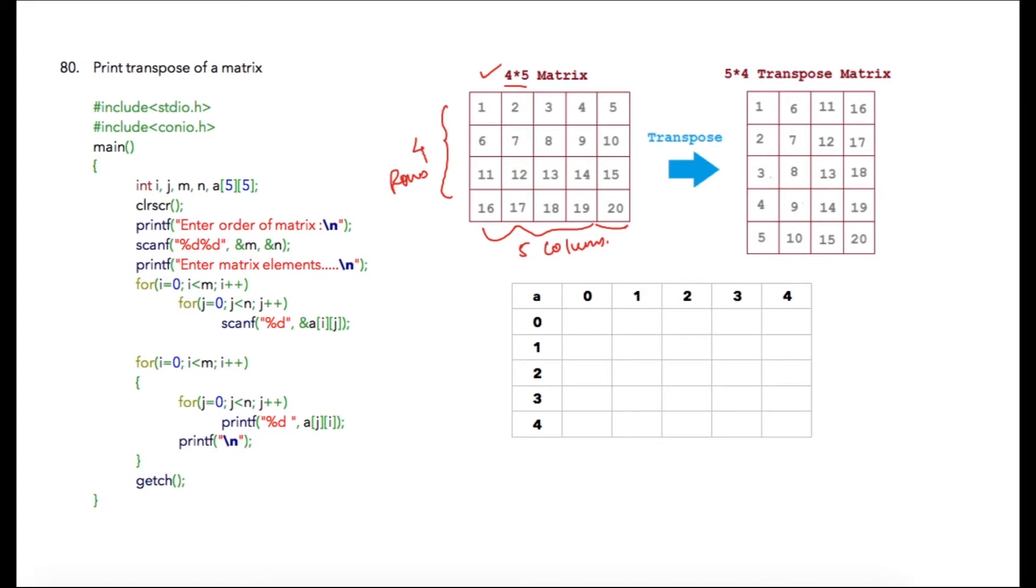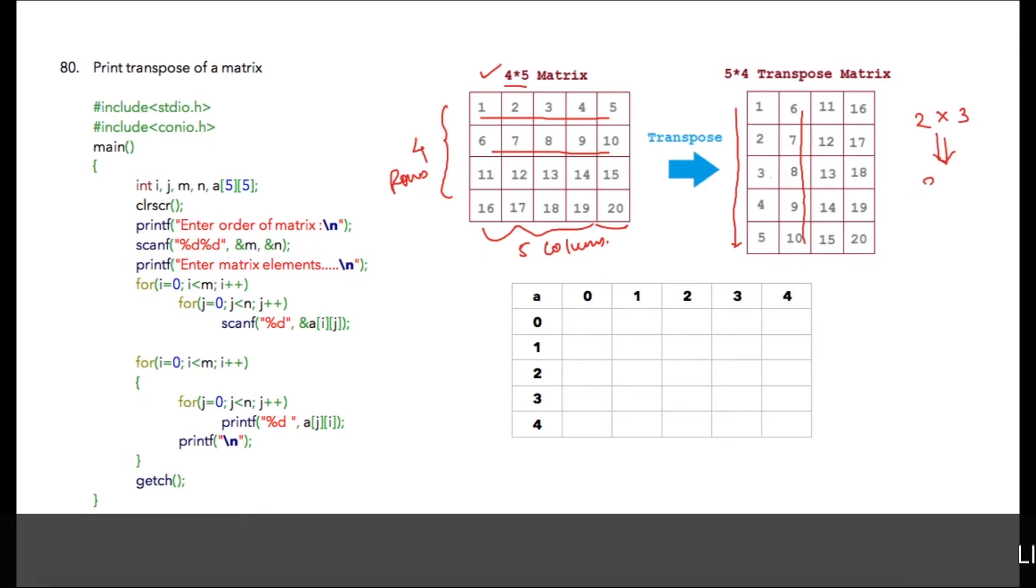All the row elements will be converted into column elements. This first row will be converted into the first column, the second row will be converted into the second column, and so on. If we have a matrix of size 2 by 3, the transpose of that matrix will be 3 by 2.